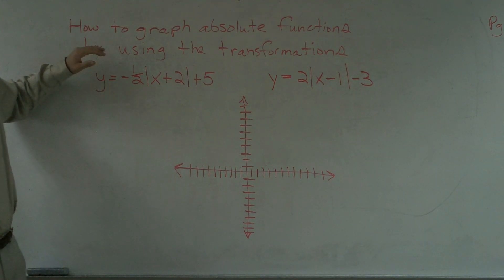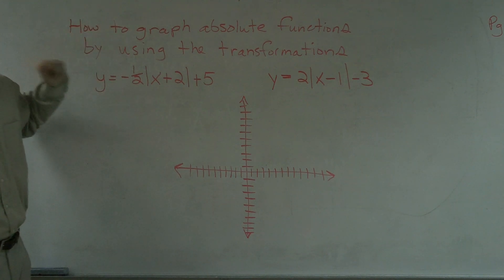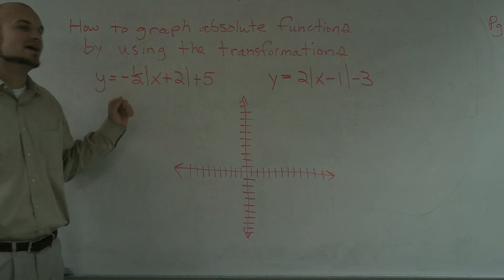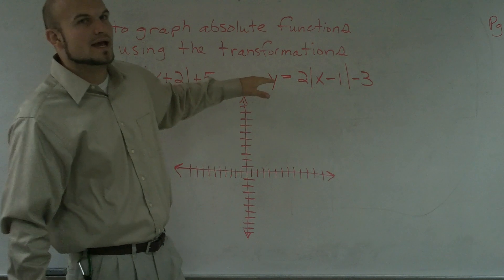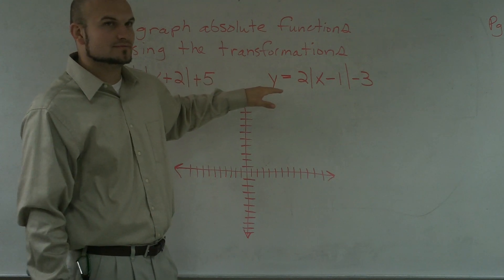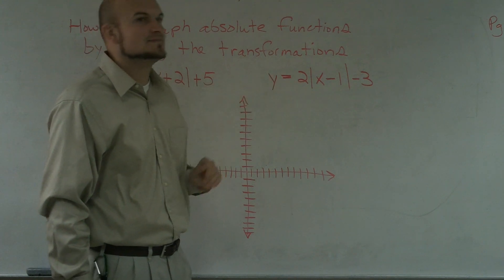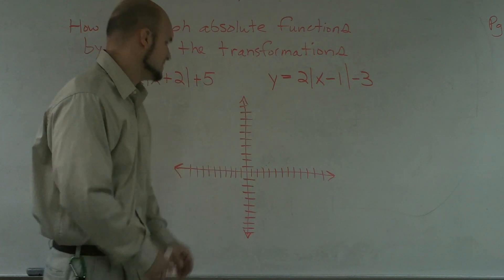Alright, what I'd like to do, ladies and gentlemen, is show you how to graph an absolute value by using the transformations. When we have y equals negative one-half absolute value of x plus 2 plus 5, and when we have y equals 2 times absolute value of x minus 1 minus 3.